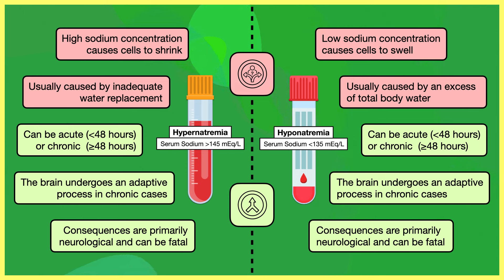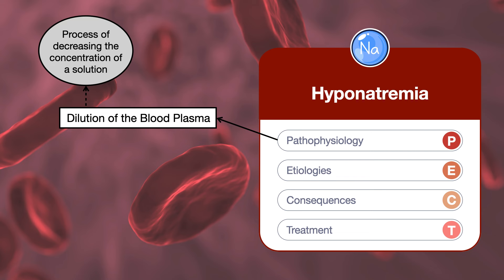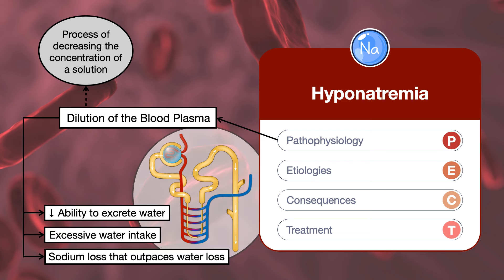I'll continue to allude to similarities and differences throughout the lesson, particularly when we get to consequences and treatment. Since hyponatremia is defined by a serum sodium level below normal concentration, it suggests there's dilution of the blood plasma — the process of decreasing the concentration of a solution. Therefore, hyponatremia can develop with a decreased ability of the kidneys to excrete water, excessive water intake exceeding the kidneys' ability to filter it, or any sodium loss that outpaces water loss.